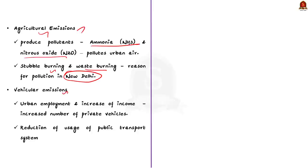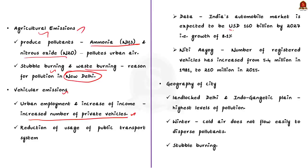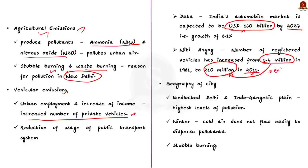Then there is the issue of vehicular emission. Increased disposable income and poor public transport infrastructure has led to rapid growth in demand for private cars and bikes. Data shows that India's automobile market is expected to touch almost 160 billion dollars by 2027. According to NITI Aayog, the number of registered vehicles in India increased from 5.4 million in 1981 to 210 million in 2015. This leads to more vehicle exhaust and more urban air pollution.